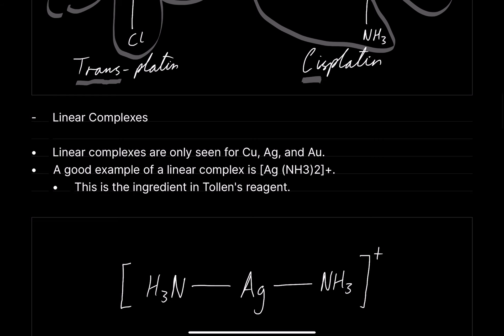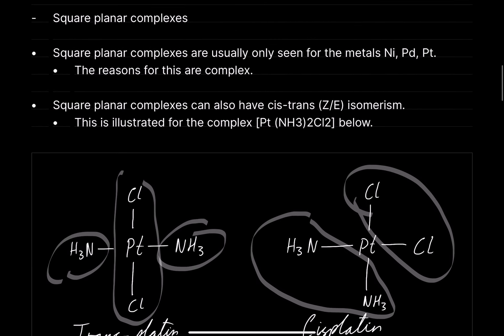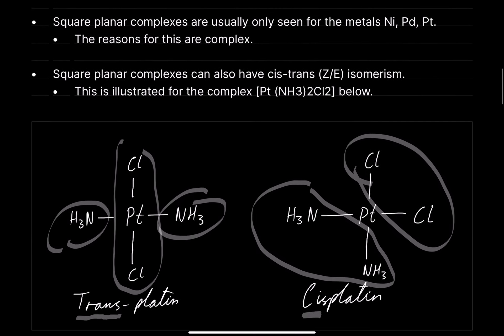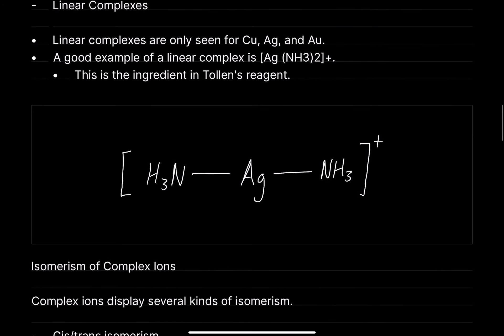Linear complexes are only seen for copper, silver, and gold. A good example of a linear complex is silver diamine, which is actually the key ingredient in Tollens reagent.